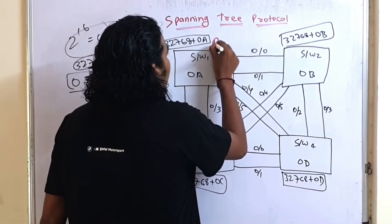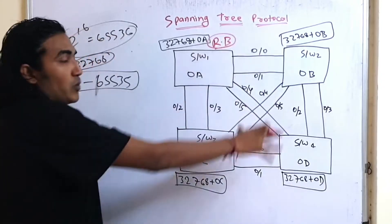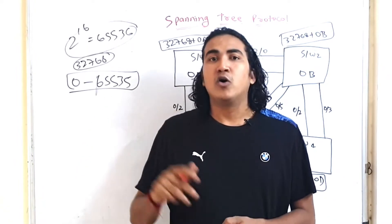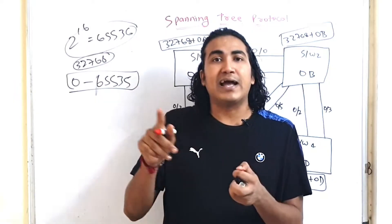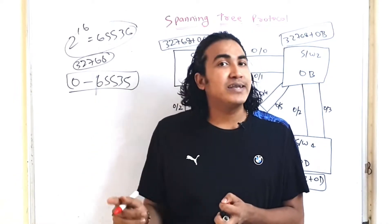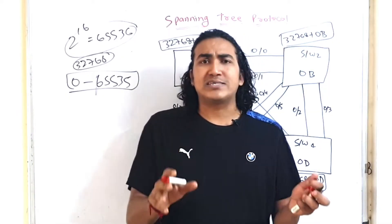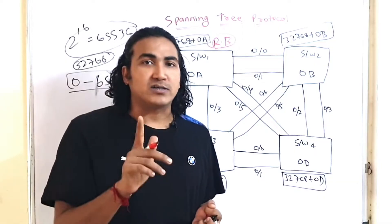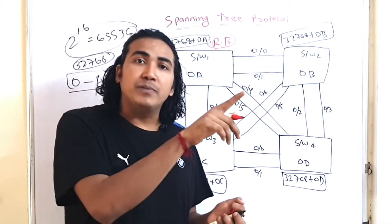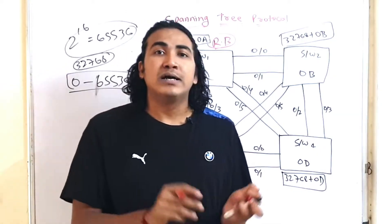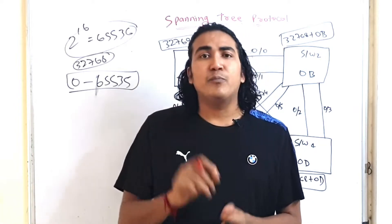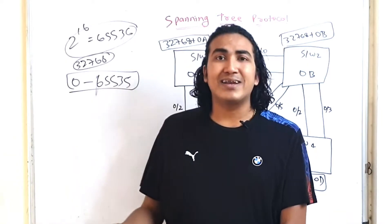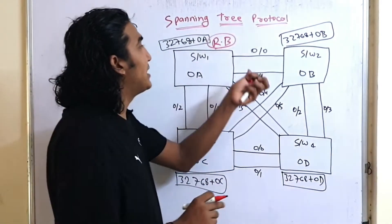Switch 1 will become the root bridge — the main switch in the topology. It will decide which port becomes DP, which becomes RP, and which becomes alternate. The state of DP and RP is forwarding, meaning they can send and receive frames. The alternate port state is blocking — blocking ports can only receive STP messages, not forward end-user frames.